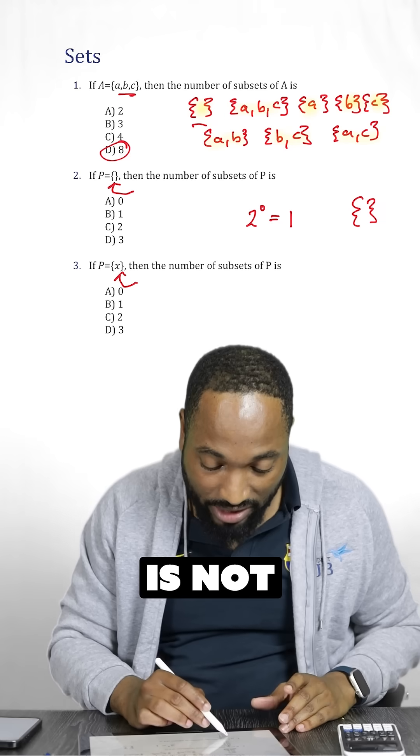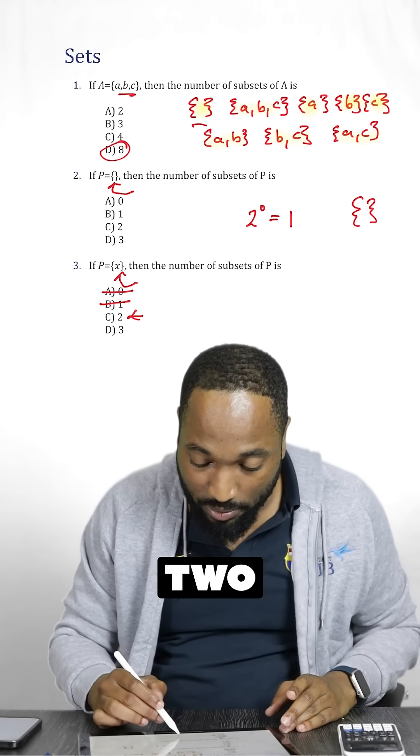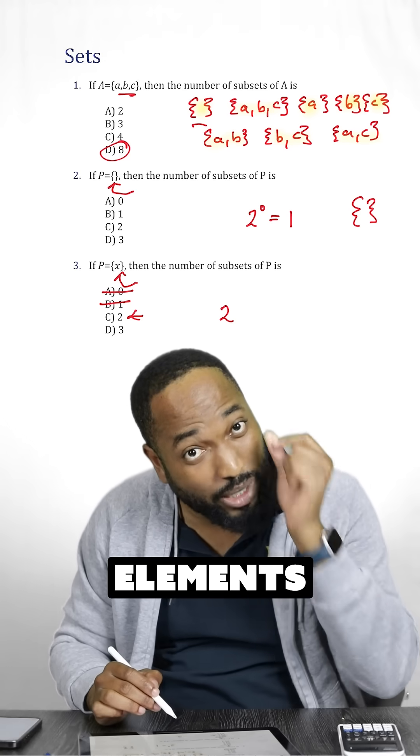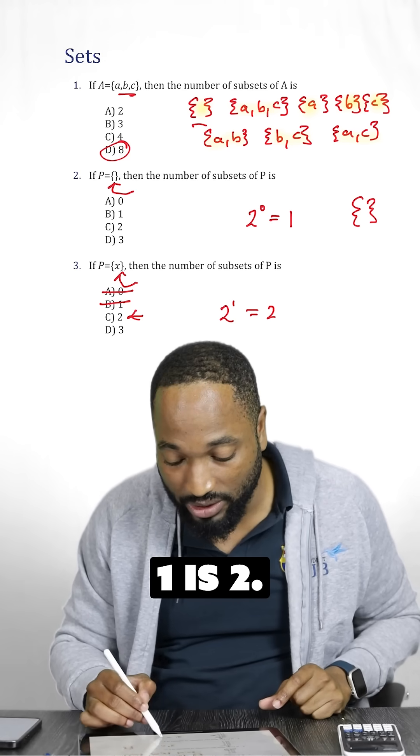This one, the answer is not 0, or 1, the answer is actually 2. Because it's 2 to the power of how many elements are you seeing there? 1. 2 to the power of 1 is 2.